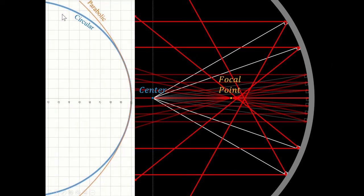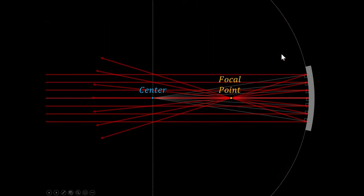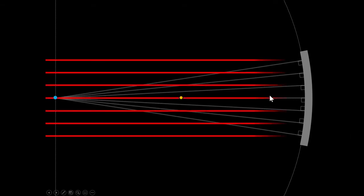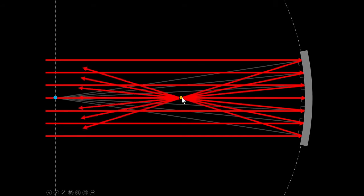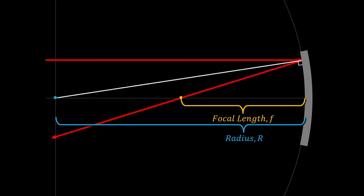This was a circular mirror, and a circle is a little bit different shape than a parabola. Although near the center the circular and parabolic shapes are nearly the same, they start to diverge further out. So if my mirror was small enough that parallel rays only hit near the center, I get a nice focal point for a circular mirror. The radius of curvature is R, and the distance from the mirror to the focal point is the focal length.